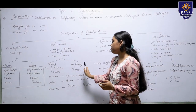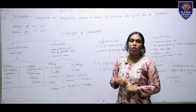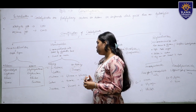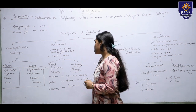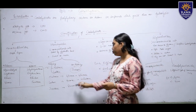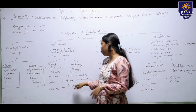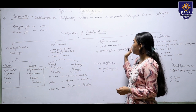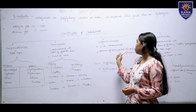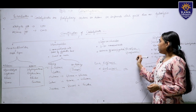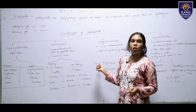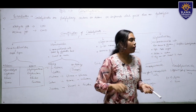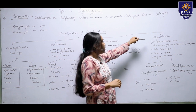Non-reducing sugars do not give a positive Benedict's test because they do not reduce cupric ions. Maltose has two glucose residues, lactose has glucose and galactose, and sucrose has glucose and fructose. Oligosaccharides have three to ten monosaccharide units and occur as glycoconjugates such as glycolipids and glycoproteins. Examples include raffinose and verbascose.